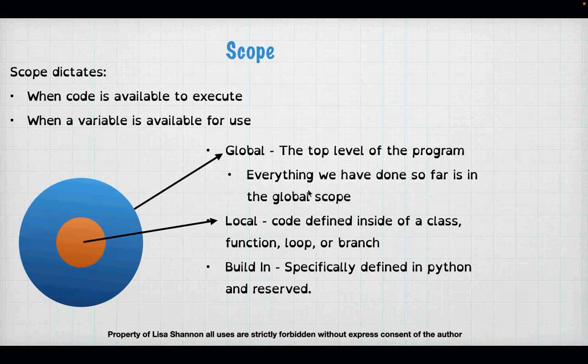We touched on scope in Module 1, but now it's becoming very important. Scope dictates when Python will execute a line of code. Everything in weeks one and two is in the global scope — everything is available to everything. Now we have local scope: when you're defining code inside a class, function, loop, or branch, that code is only available inside that branch or loop. If an if or elif statement doesn't evaluate to true, the code in its local scope never executes.